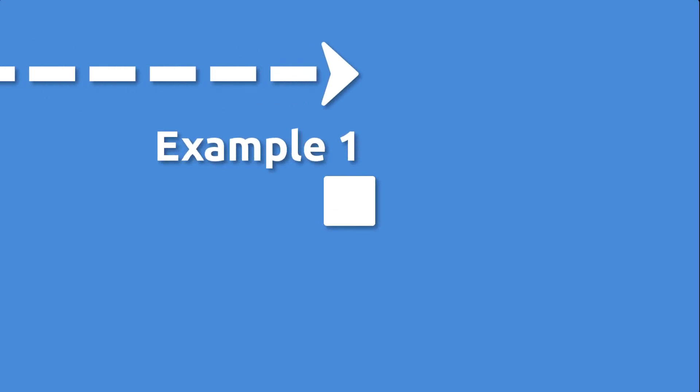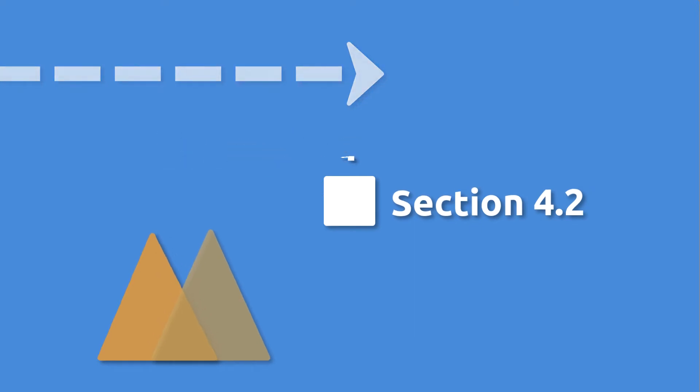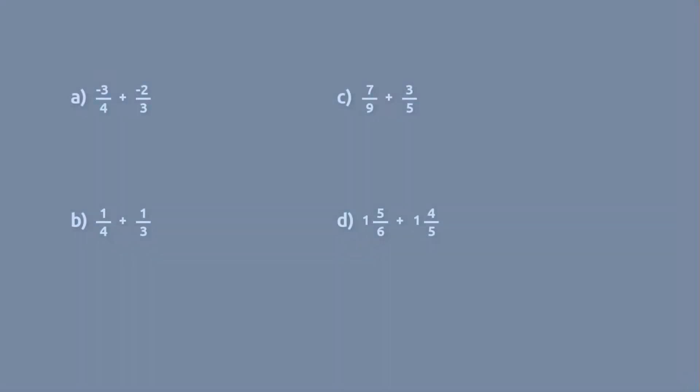Comparing rational numbers. In example one, we're given fractions and a couple of mixed numbers, and we're asked to compare them as being less than, greater than, or equal to. When we have fractions, we have a couple of options — we could convert them to decimals, but the easiest way, in my opinion, is to put them over a common denominator.